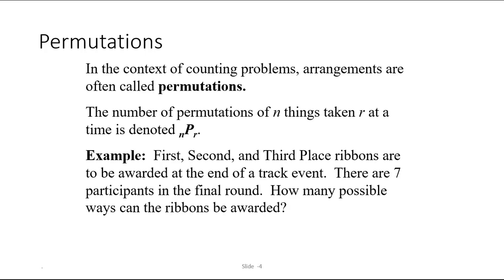There are seven participants in the final round. How many possible ways can the ribbons be awarded? This is considered an arrangement because it's different for Sam to get first place, Maria to get second place, and Ishmael to get third place, than for Maria to get first, Ishmael to get second, and Sam to get third, for example. We're taking seven runners, taking three at a time.